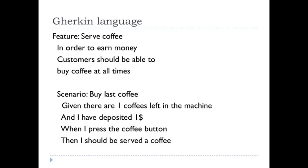Gherkin language is very simple — everyone on your team will be able to understand it. First you write what your feature is, then you start writing scenarios, which are automated. All scenarios are written in the form of Given, When, Then. Given specifies the prerequisite context for your scenario. When specifies the action. Then is your expectation — your validation of the outcome.